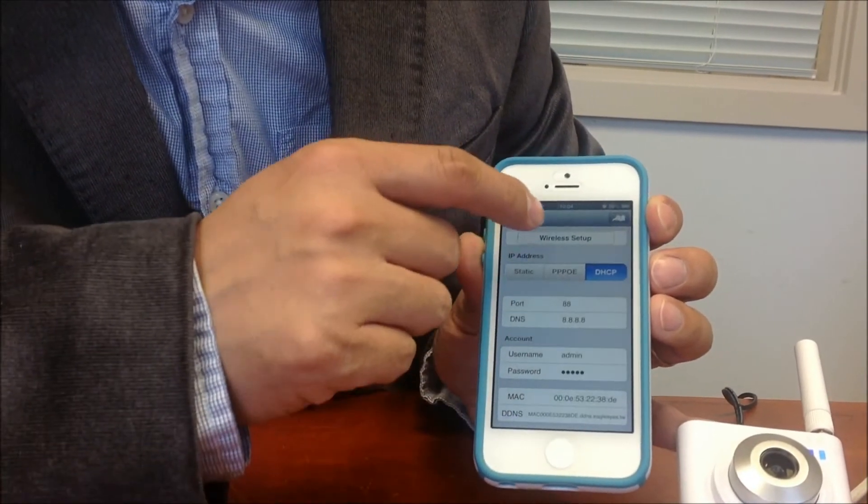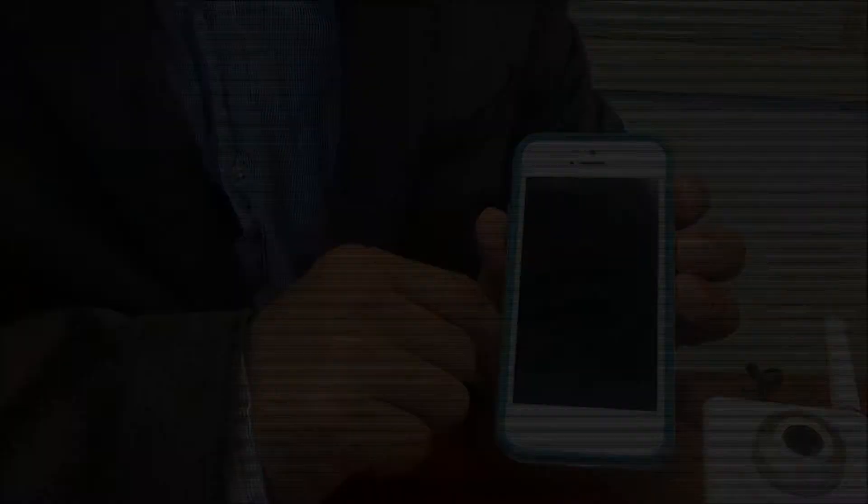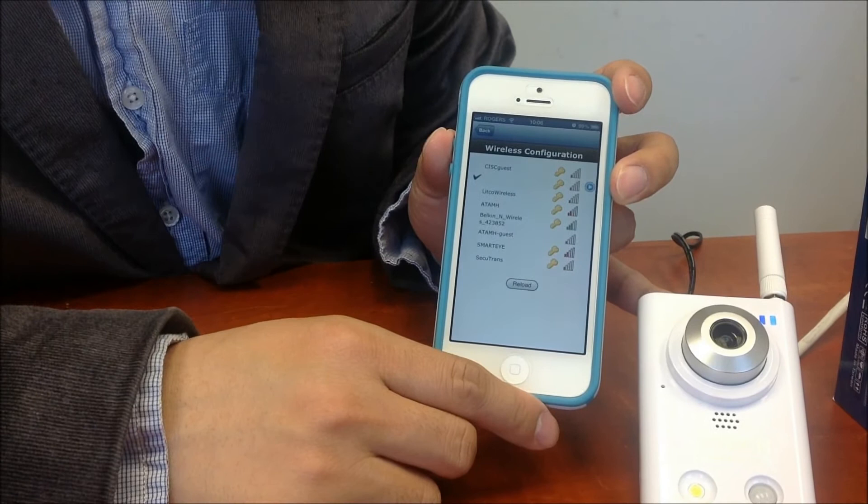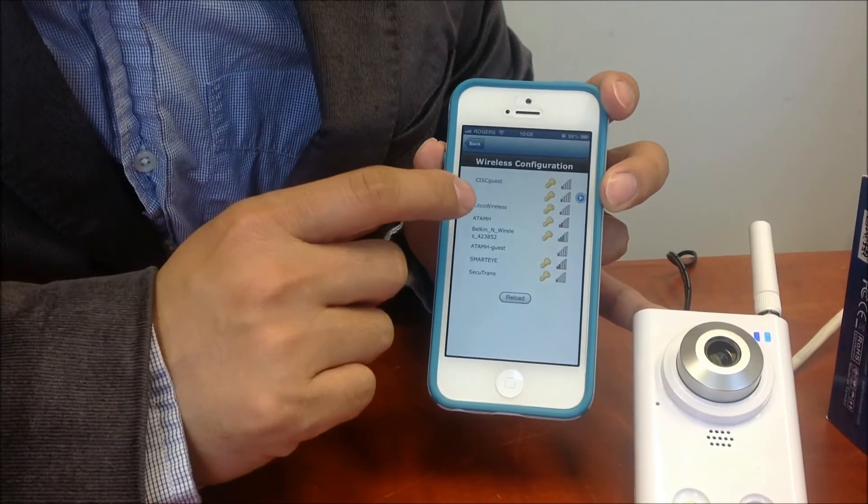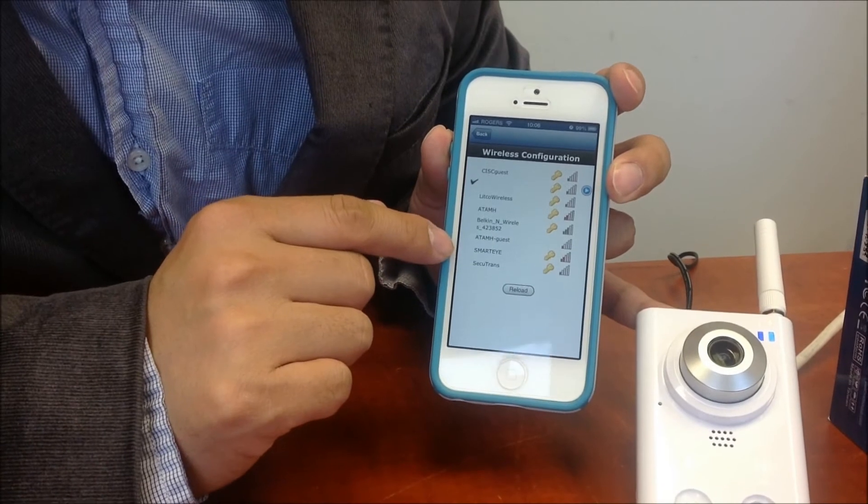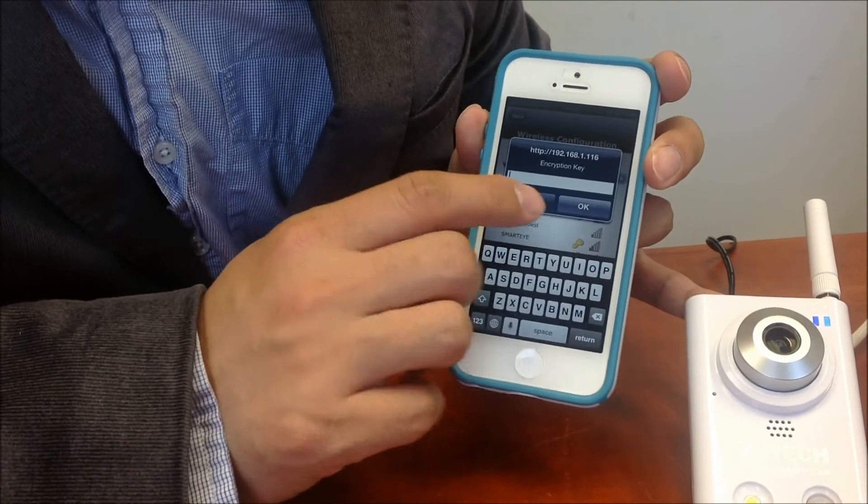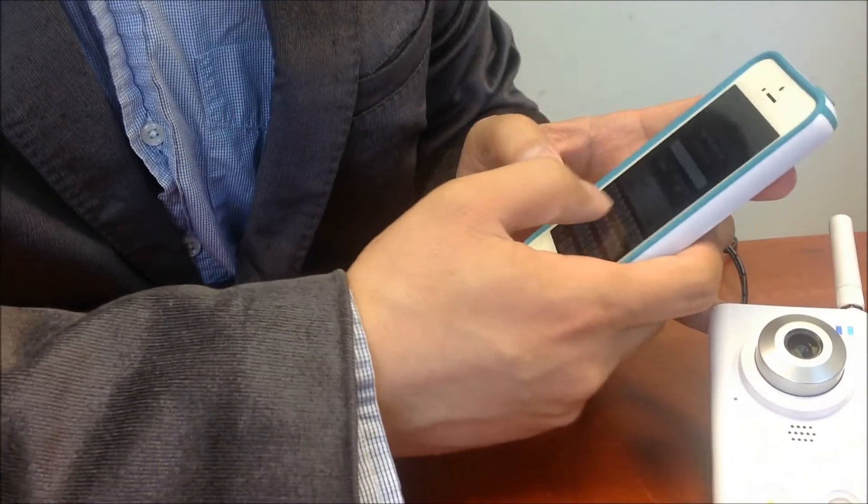And then we go to wireless setup. So we search all the wireless networks. We choose the correct network and put the password.